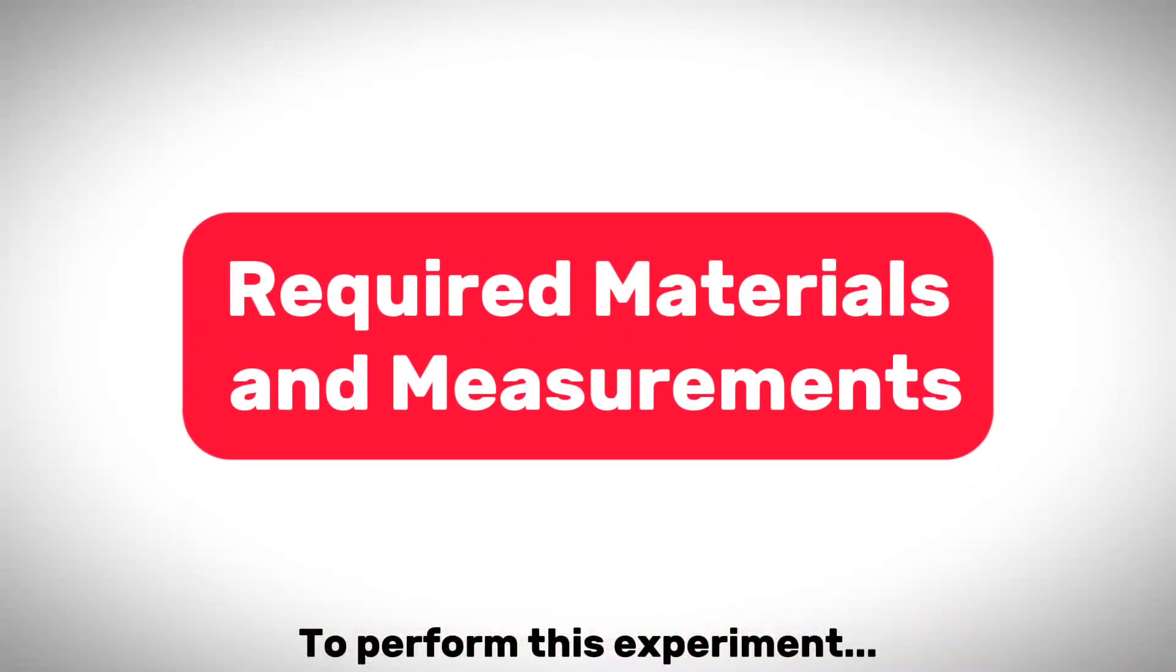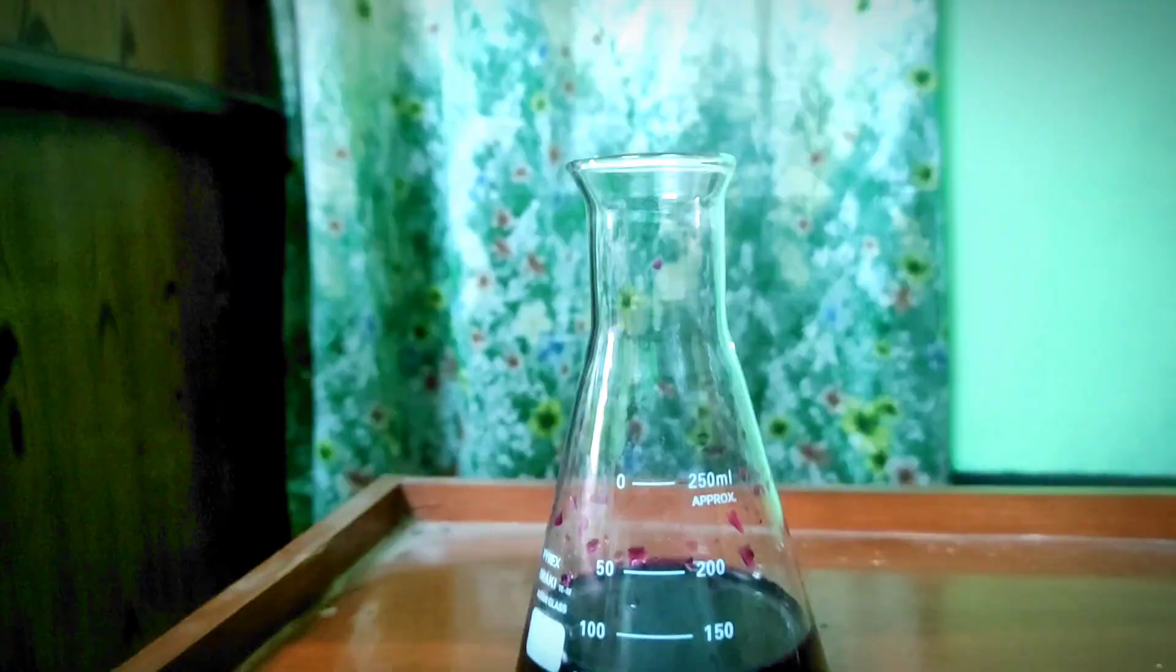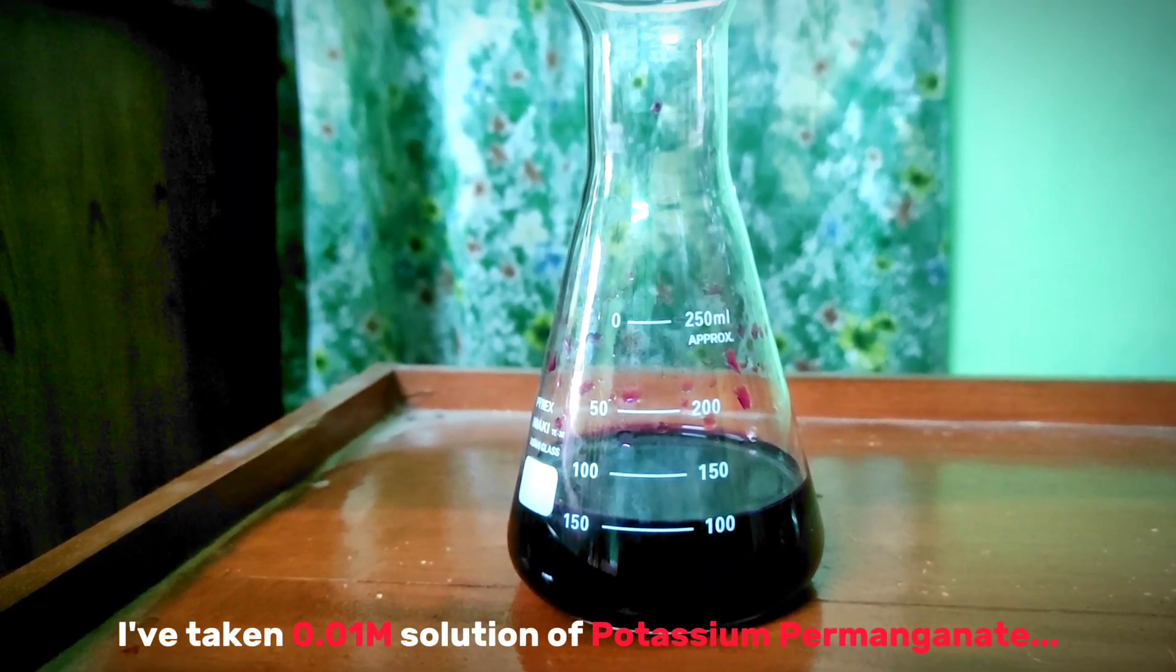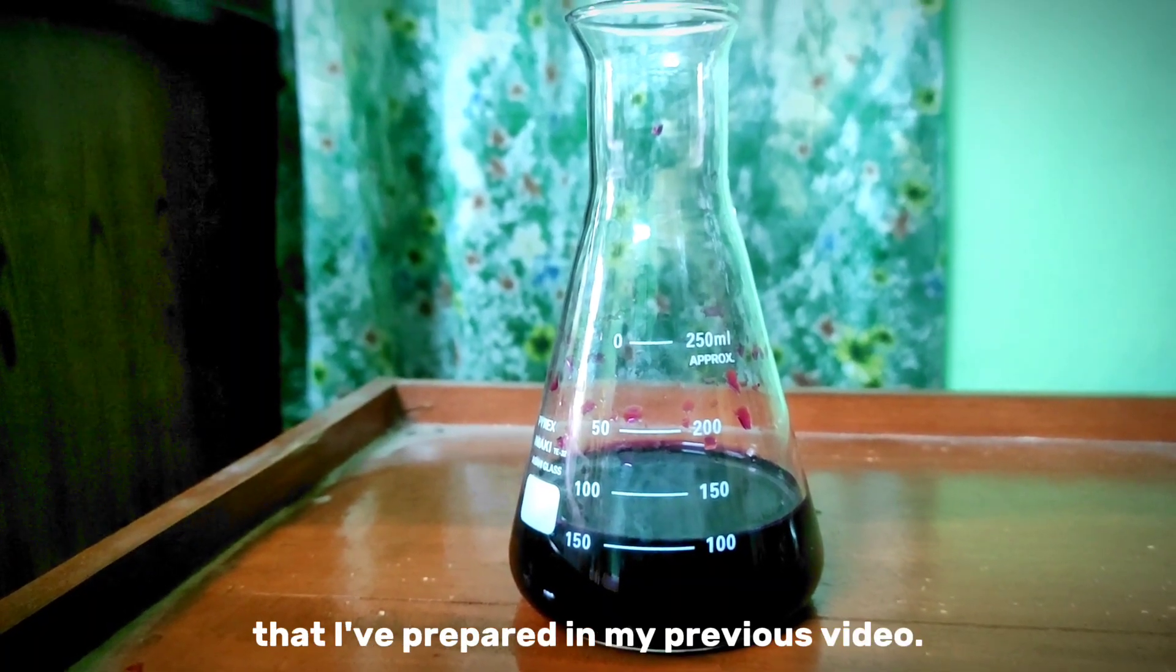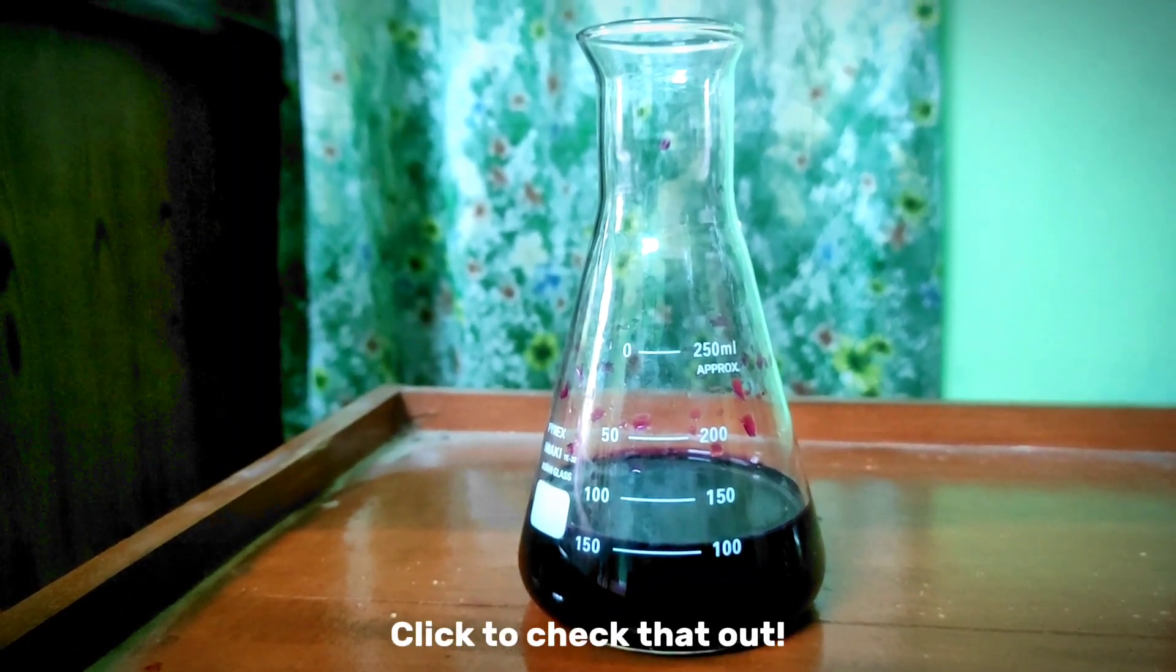To perform this experiment, you will need the following materials and measurements. Here in the conical flask, I've taken 0.01 molar solution of potassium permanganate that I've prepared in my previous video. The eye button has already arrived. Click to check that out.